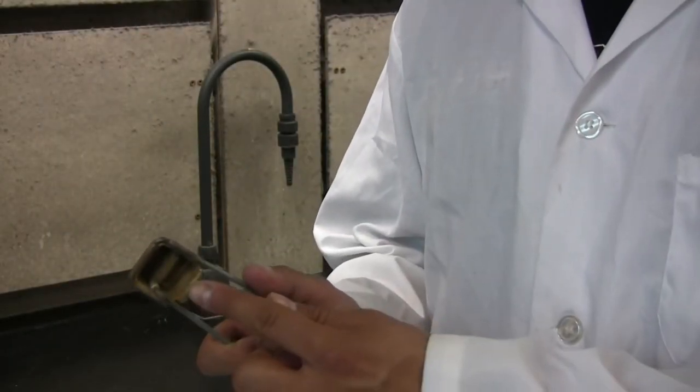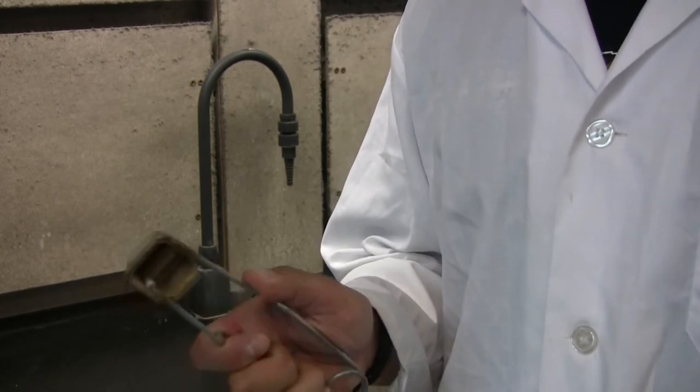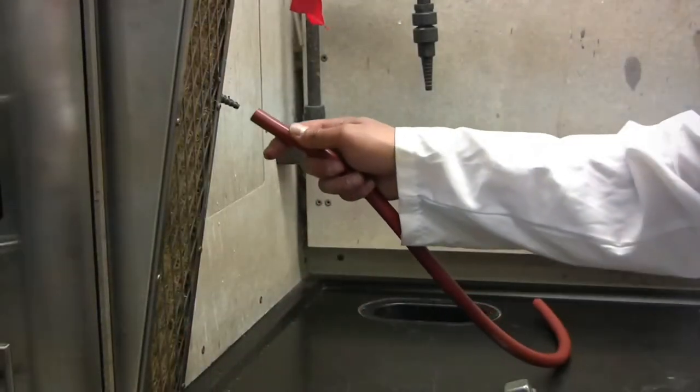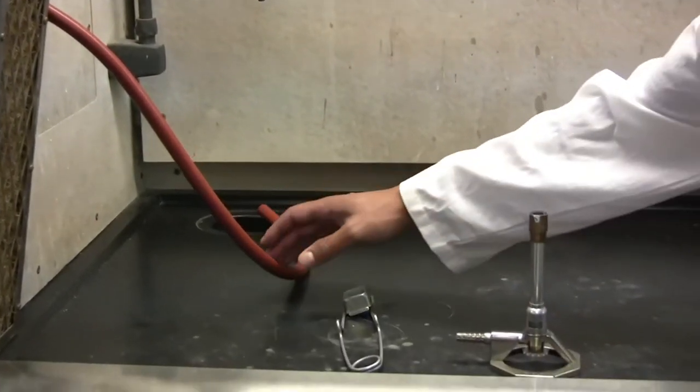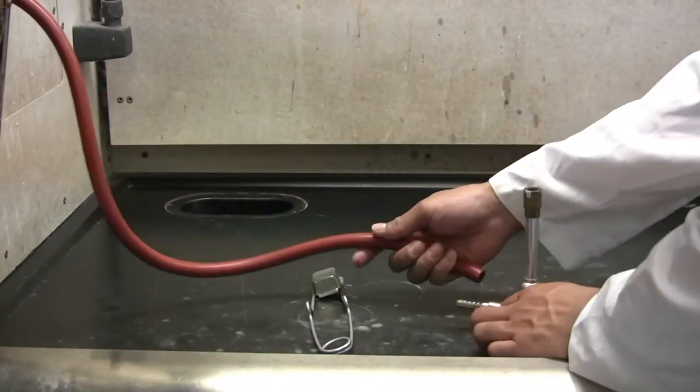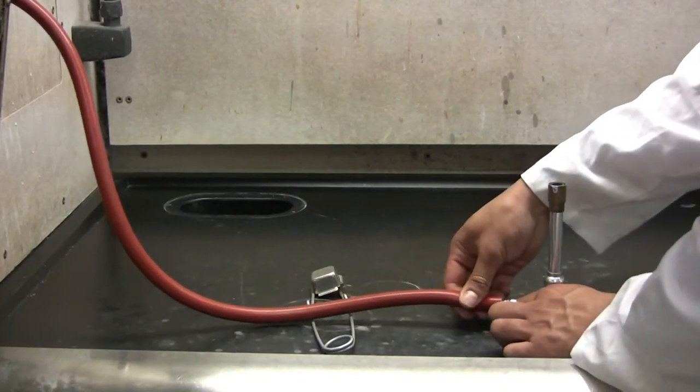Start by checking to make sure the flint is in your striker. You should see sparks when striking it. Connect one end of the rubber hose to the gas nozzle and the other end to the Bunsen burner. Make sure there is a tight fitting on these seals.